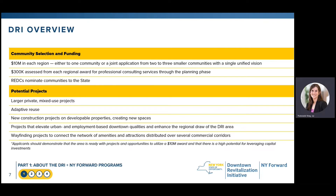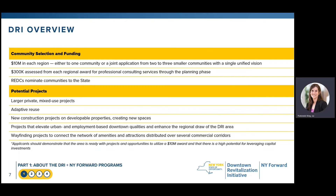In Round 6, $10 million will be allocated in each regional economic development council region. This will be awarded to either one community or a joint application of two to three smaller communities that can justify they have a single unified vision and that those downtowns complement and support one another. An initial $300,000 from the $10 million award is used to pay for professional consulting services during the planning phase, resulting in the development of a strategic investment plan.